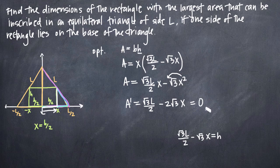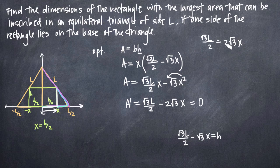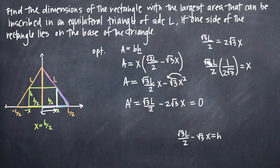We set the derivative equal to 0 and solve for x. Adding 2√3·x to both sides gives √3·L/2 = 2√3·x. Dividing both sides by 2√3, the √3 cancels from both numerator and denominator, leaving x = L/4.